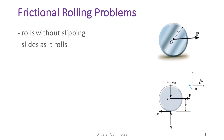In many situations we encounter rolling problems, like a rigid body which is a drum being pulled over a surface. As it rolls, it might slip or it may not.